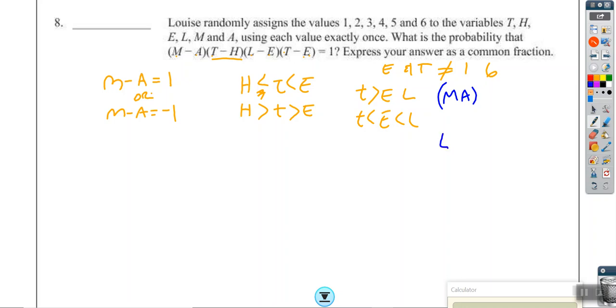So we know that we can go l, e, t, h, and that satisfies these requirements over here in the orange. Or, or we could also go h, the opposite order, h, t, e, l. So we can go both of these ways.